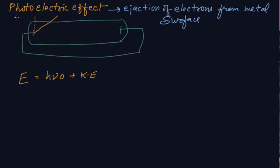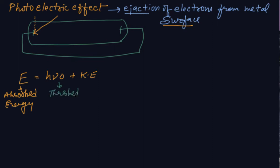Dear students, the photoelectric effect is the ejection of electrons from the metal surface whenever energy is thrown on the metal. This absorbed energy is compared to the threshold energy or threshold frequency, which is the minimum amount of energy required to release the electron from the metal surface, also denoted as W₀.